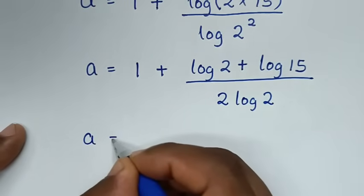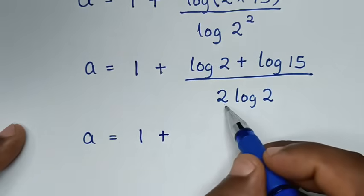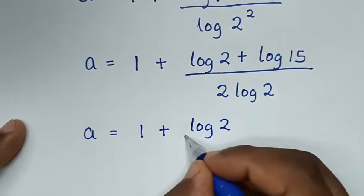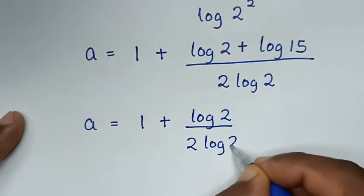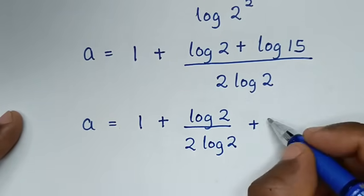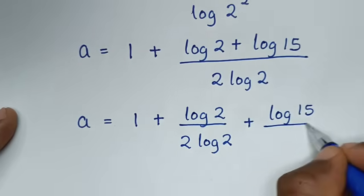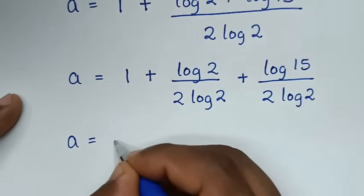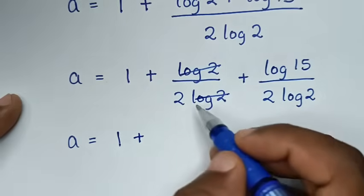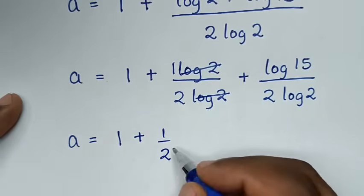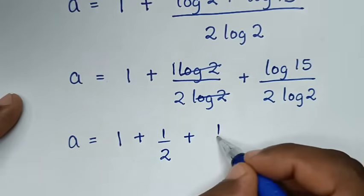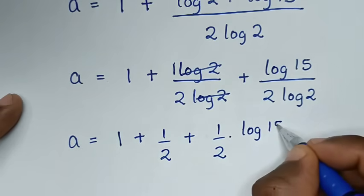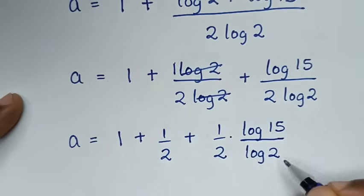This square will move to the front, giving 2 log of 2 in the denominator. Then a is equal to 1 plus the quantity log of 2 plus log of 15, all divided by 2 log of 2. Dividing each term, we get log of 2 over 2 log of 2 plus log of 15 over 2 log of 2.